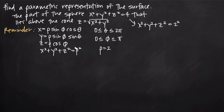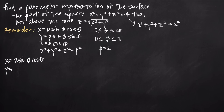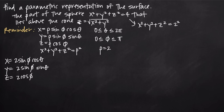In spherical coordinates, rho represents the radius of the sphere, and in real three-dimensional space we can't have a negative radius, so rho must be greater than or equal to 0, which means rho equals 2. Our parametric equations are therefore: x equals 2 sine of phi times cosine of theta, y equals 2 sine of phi times sine of theta, and z equals 2 cosine of phi. These three parametric equations represent the sphere, but they represent the entire sphere, and we need only the part that lies above the cone.